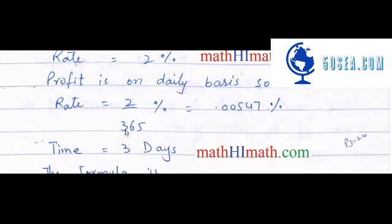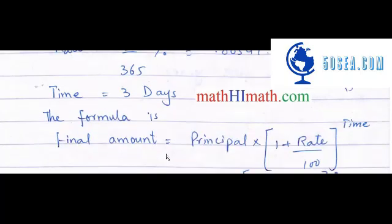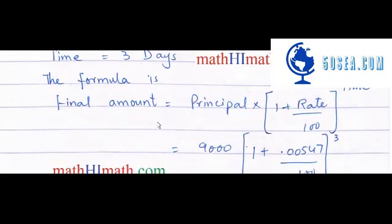On a daily basis, we divide 2 by 365. So the rate equals 2 divided by 365, divided by 100, which gives us 0.00547% as the daily rate. The time is 3 days. Now we have all the values we need.